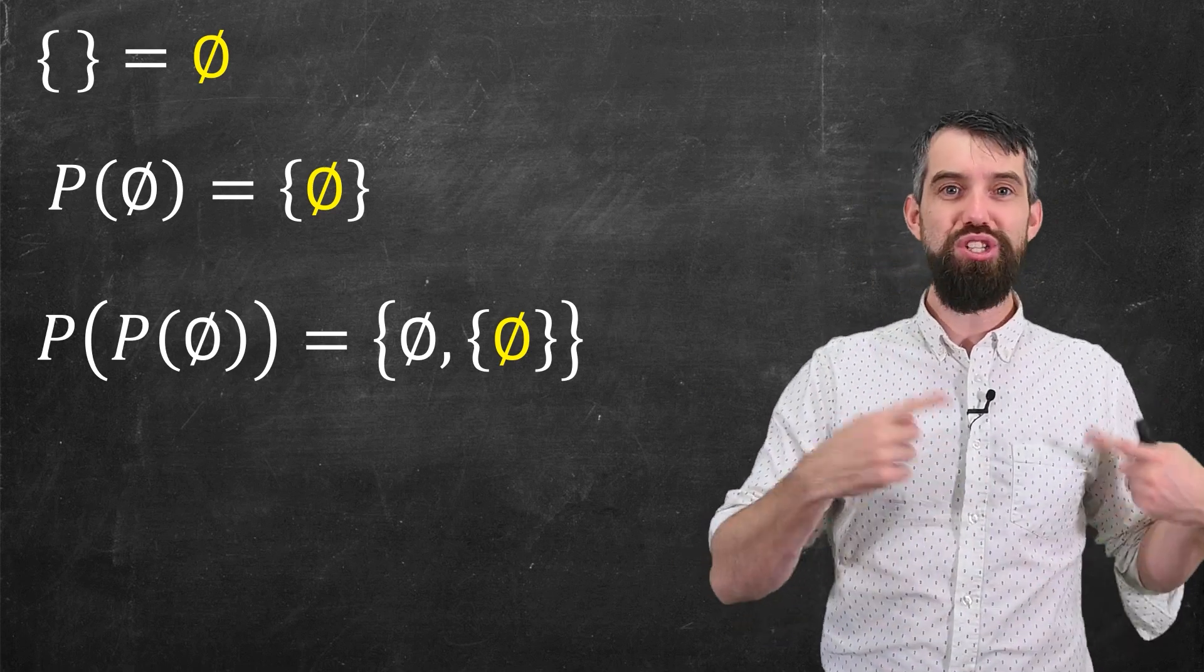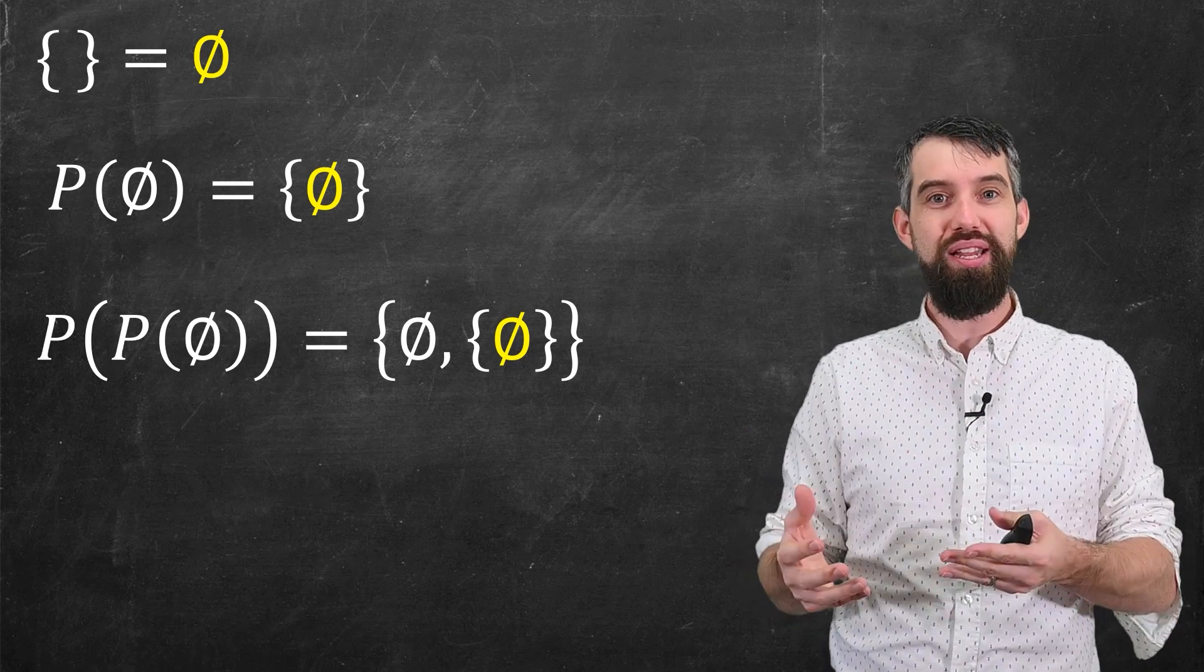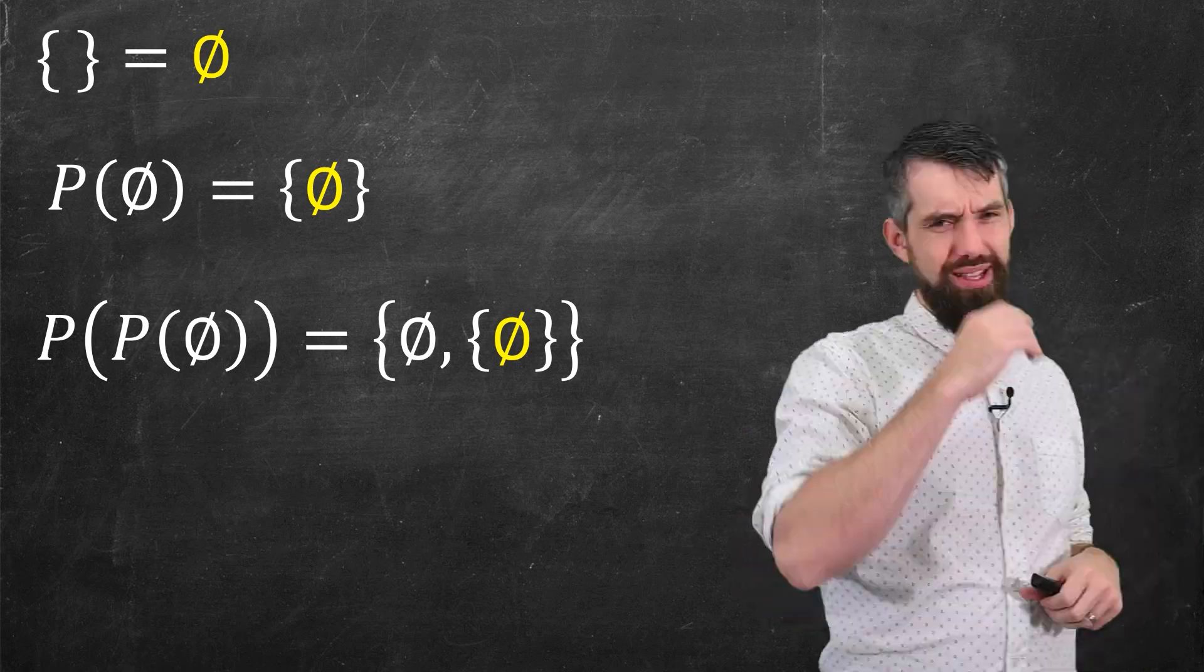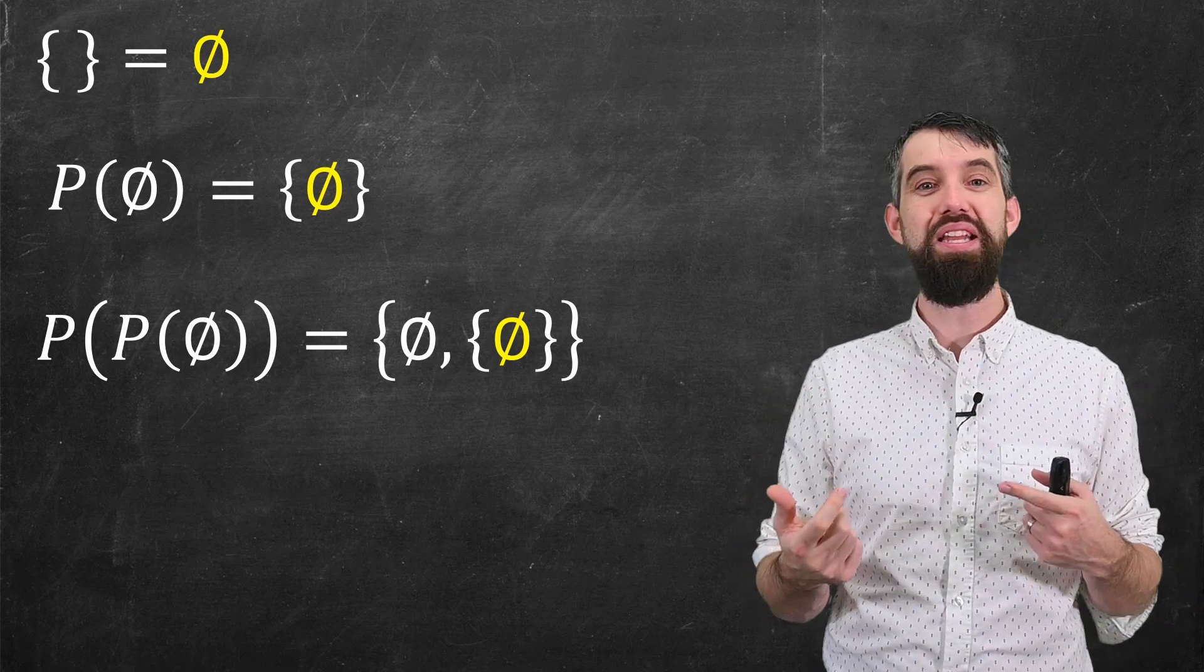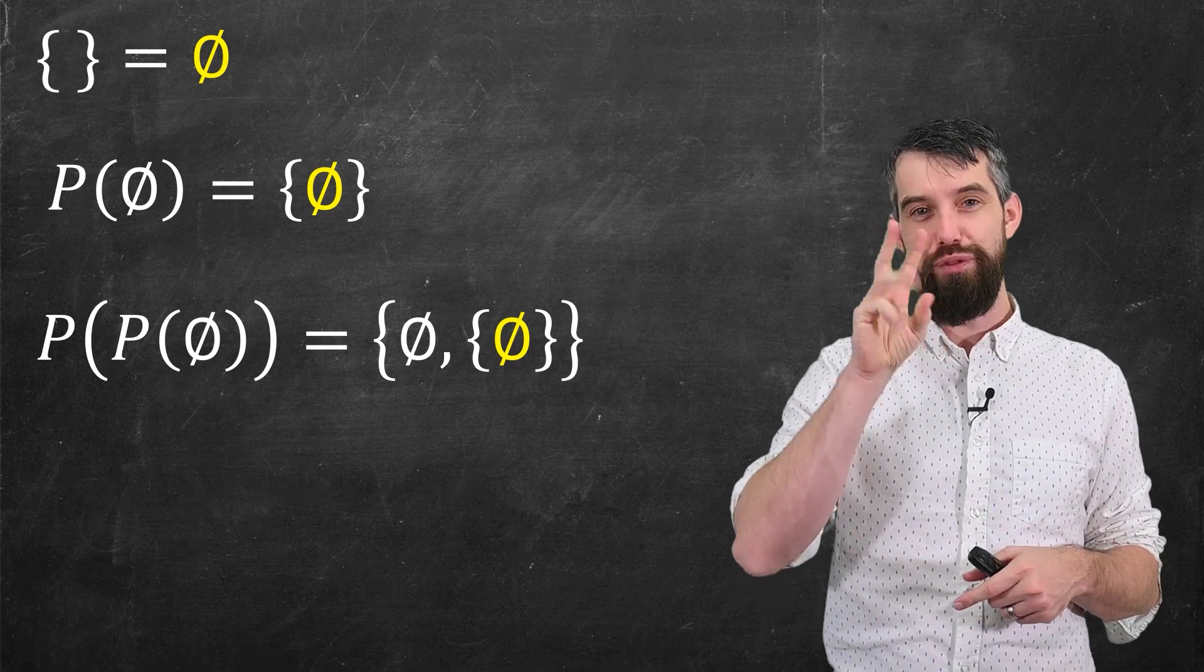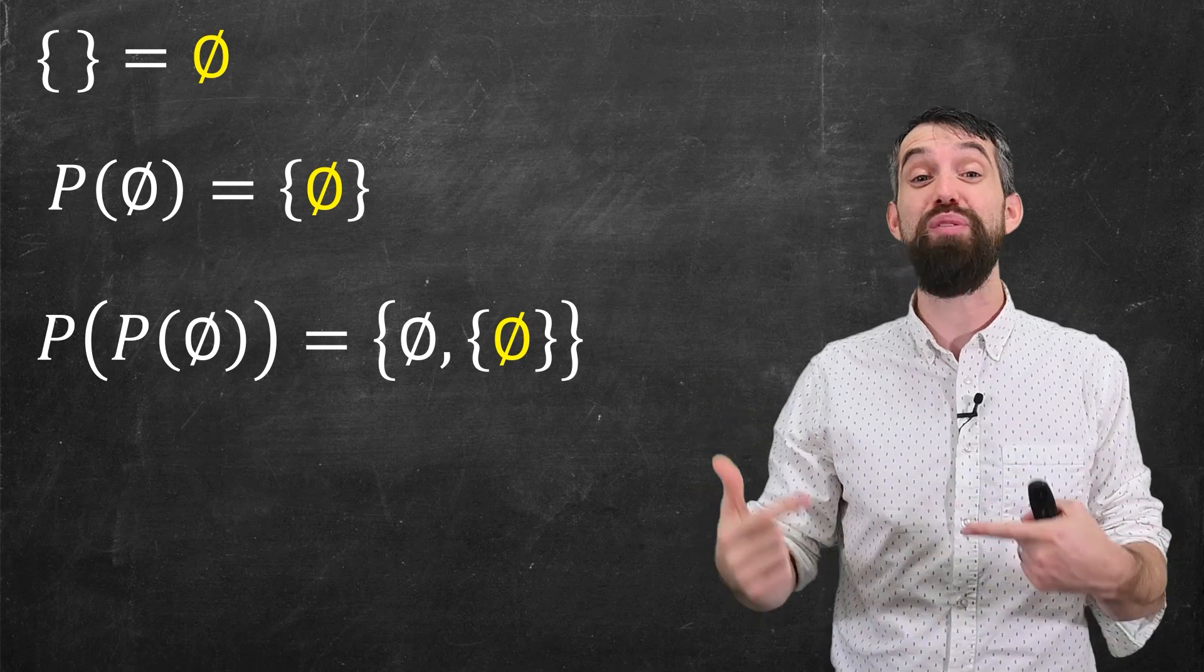There was only one thing in the original power set of the empty set, and so that's either not included or included. This has two elements in it. So we've seen a power set with two elements, with four elements, with eight elements. It sort of makes me think that there's going to be a bit of a pattern here.